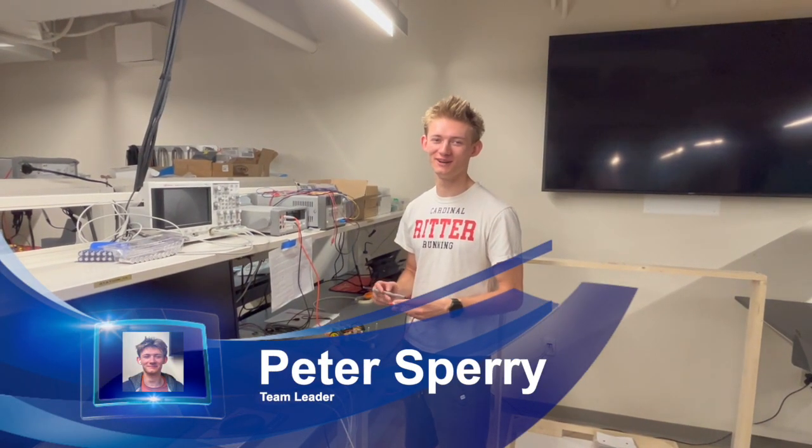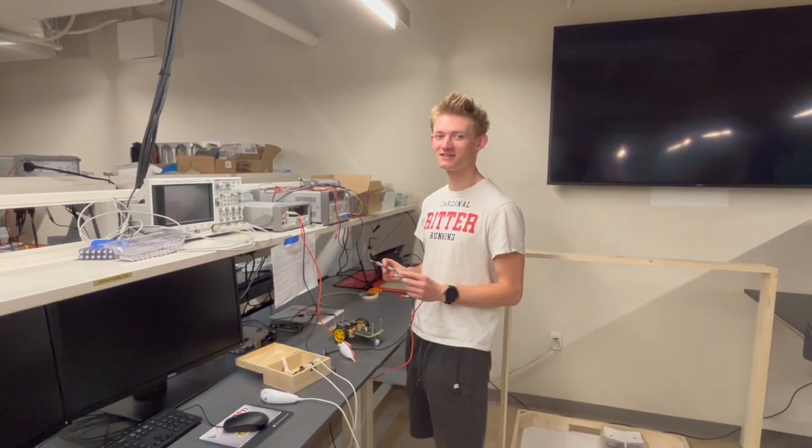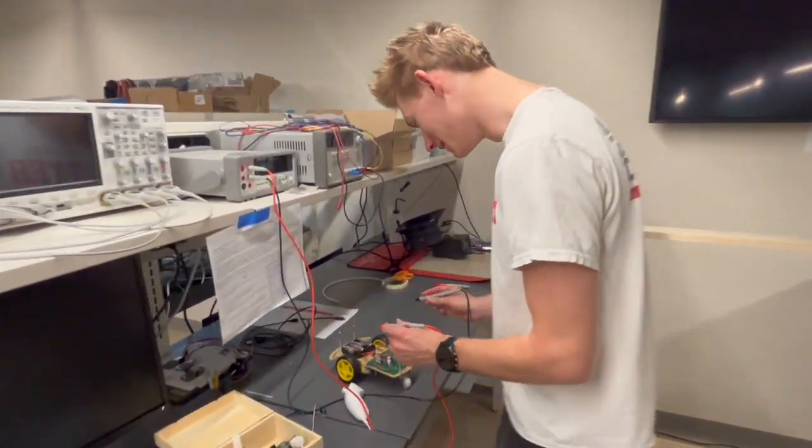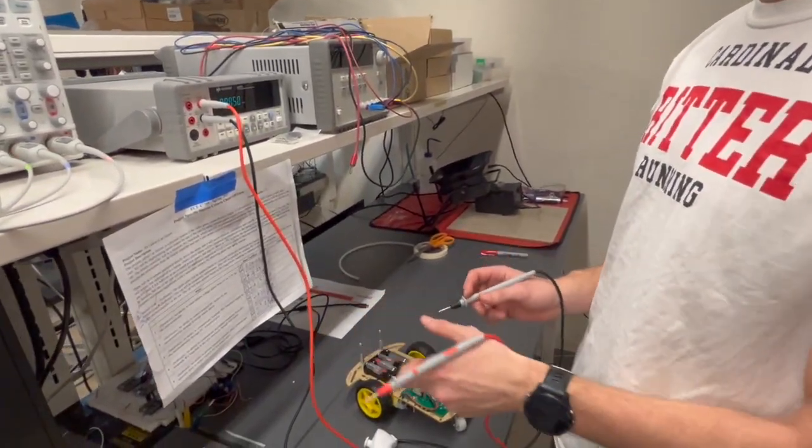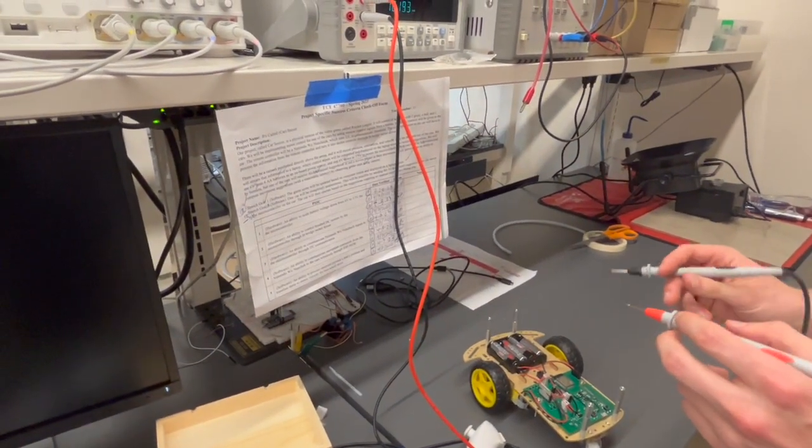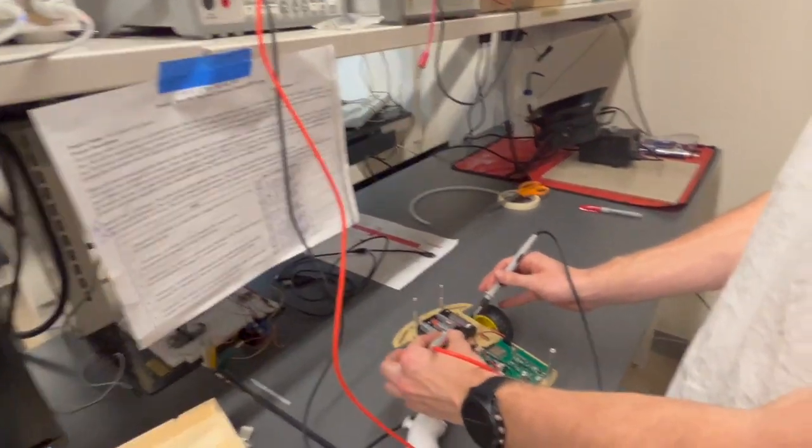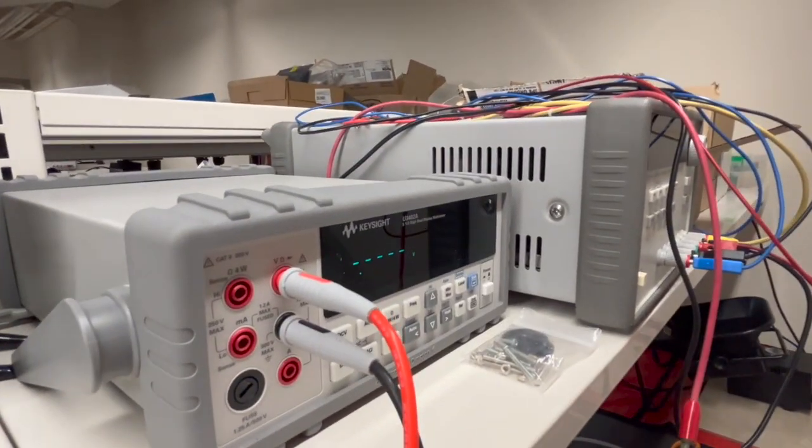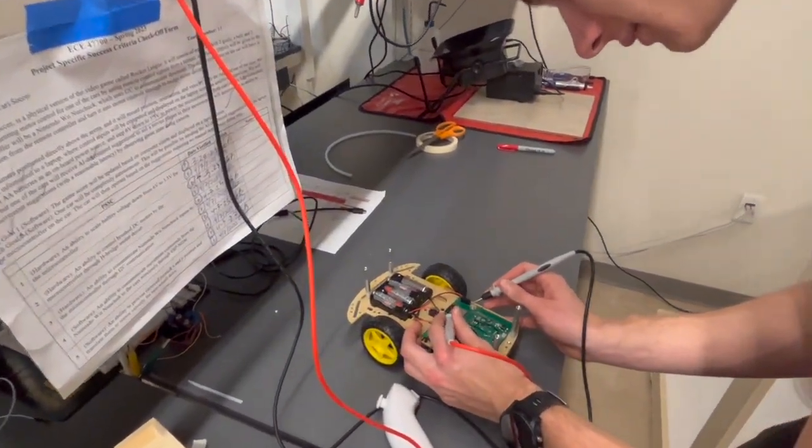Hello, my name is Peter Sperry, and I'm demonstrating PSSC 1 for Team 13. Our first PSSC is the ability to scale battery voltage from 6 volts to 3.3 for the microcontroller. The 6 volts is across the battery, and 3.3 is going to be across the micro.